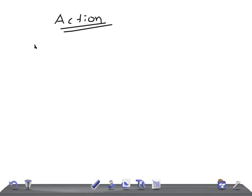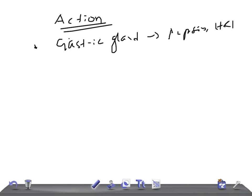Gastrin stimulates the gastric glands to secrete gastric juice with more pepsin and hydrochloric acid (HCl). It also accelerates gastric motility and promotes the growth of the gastric mucosa.